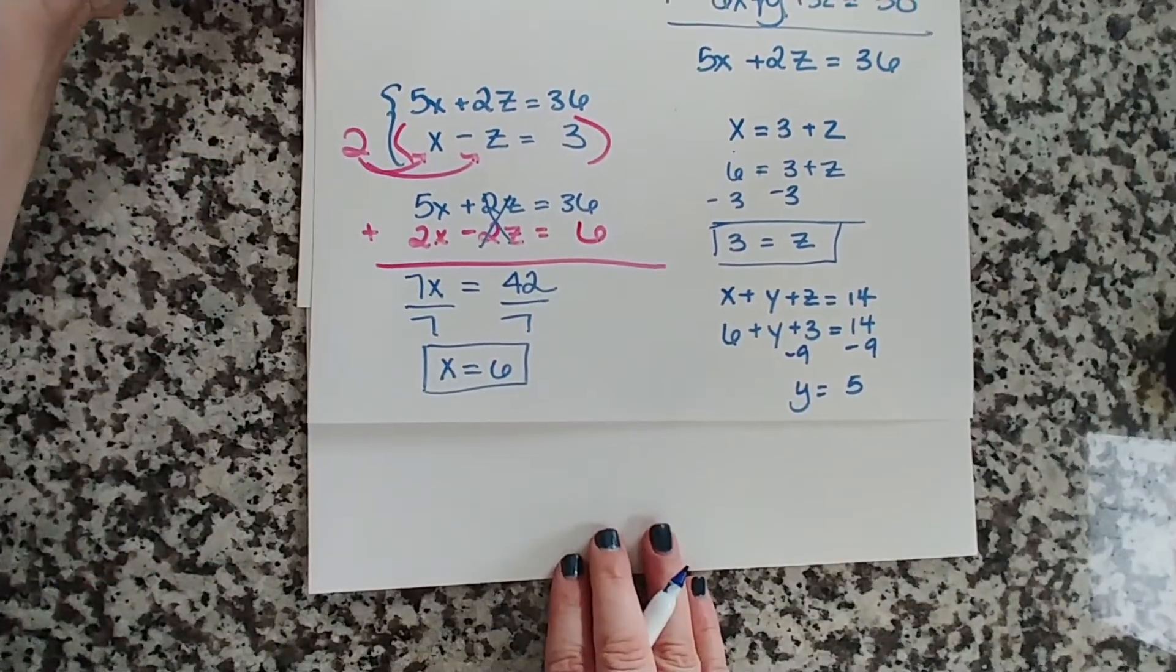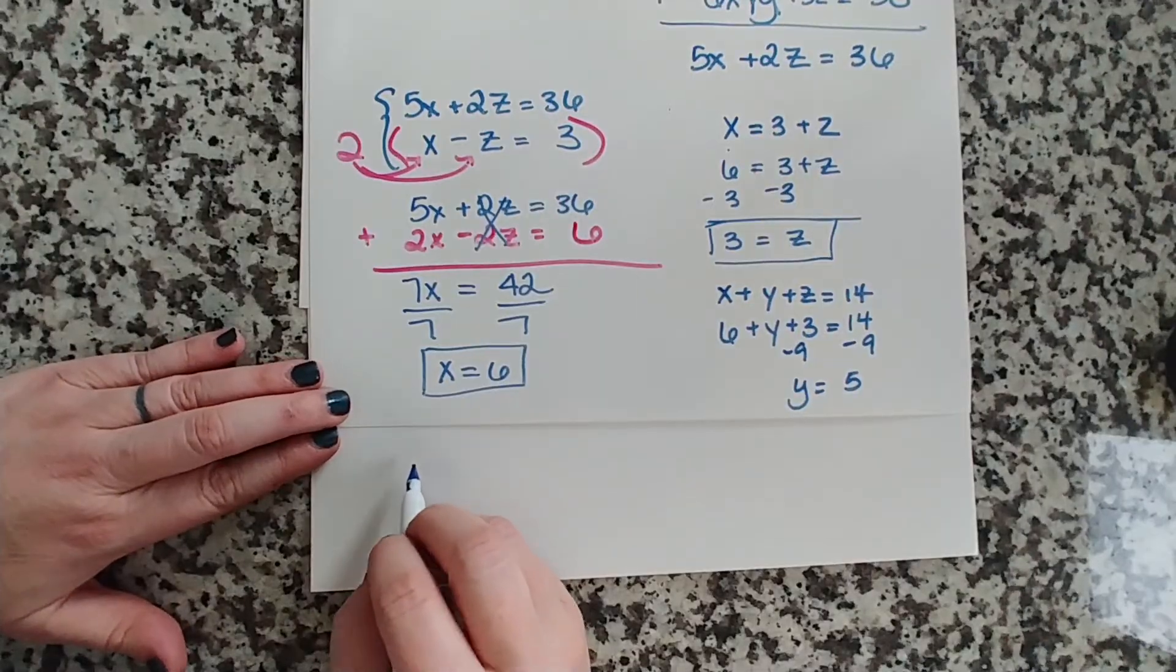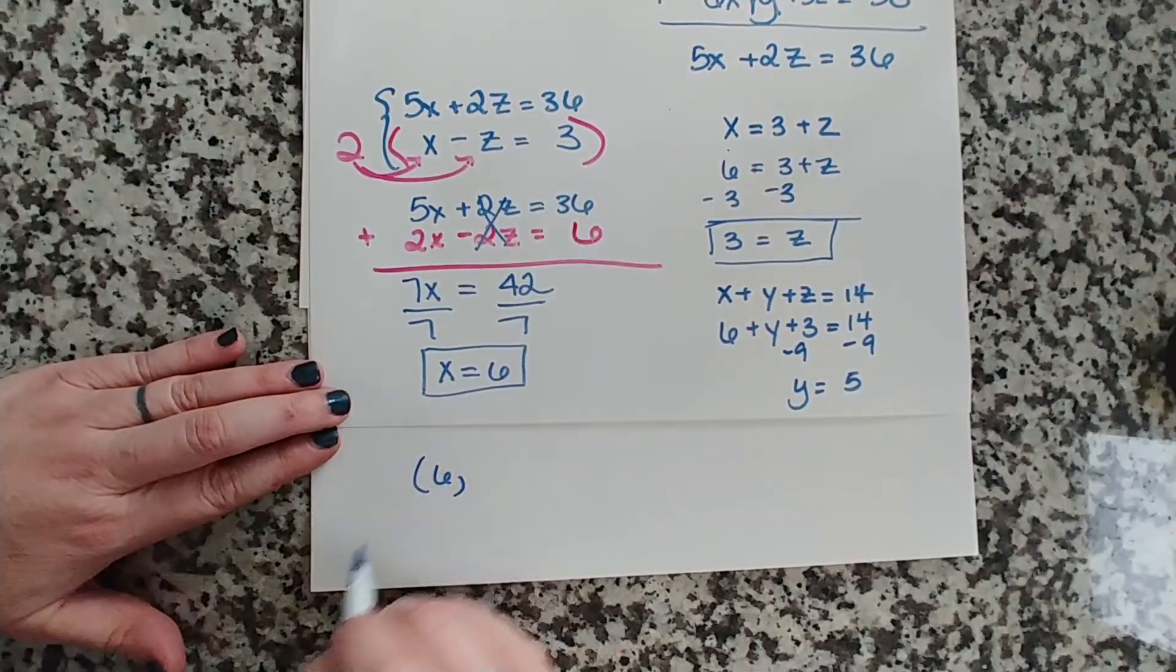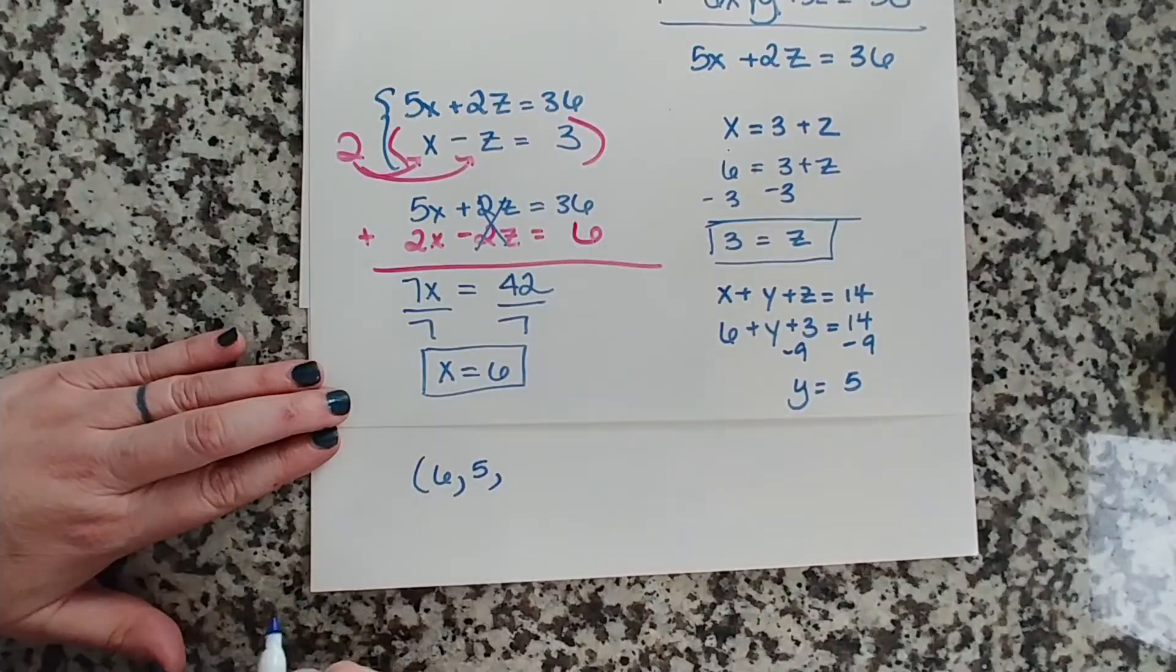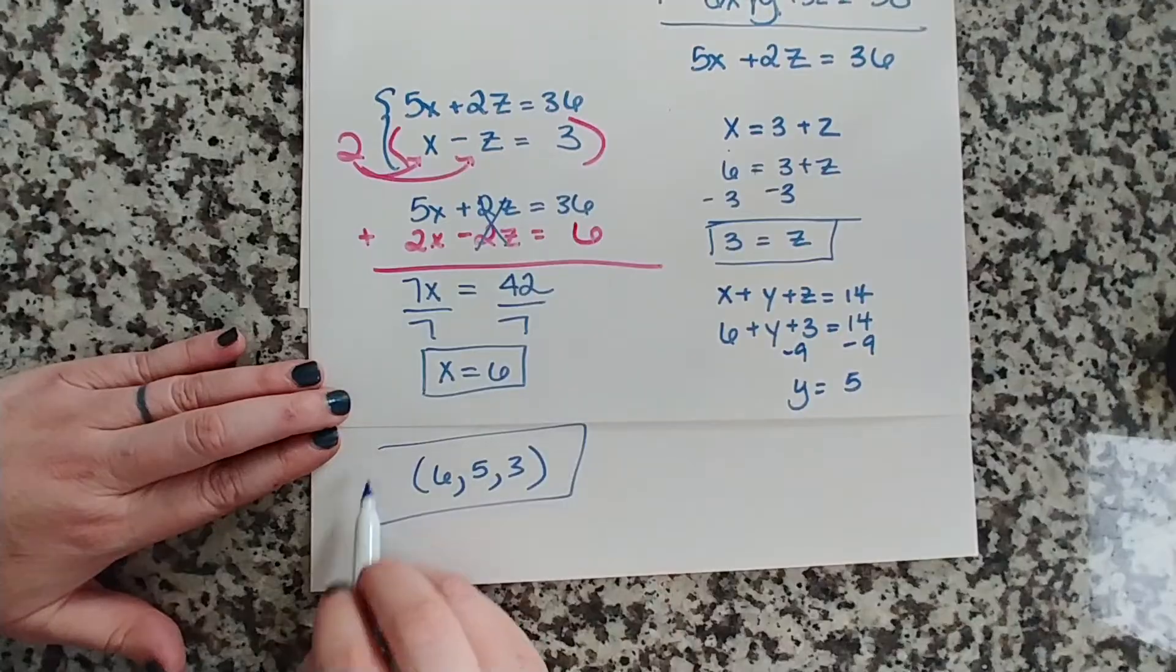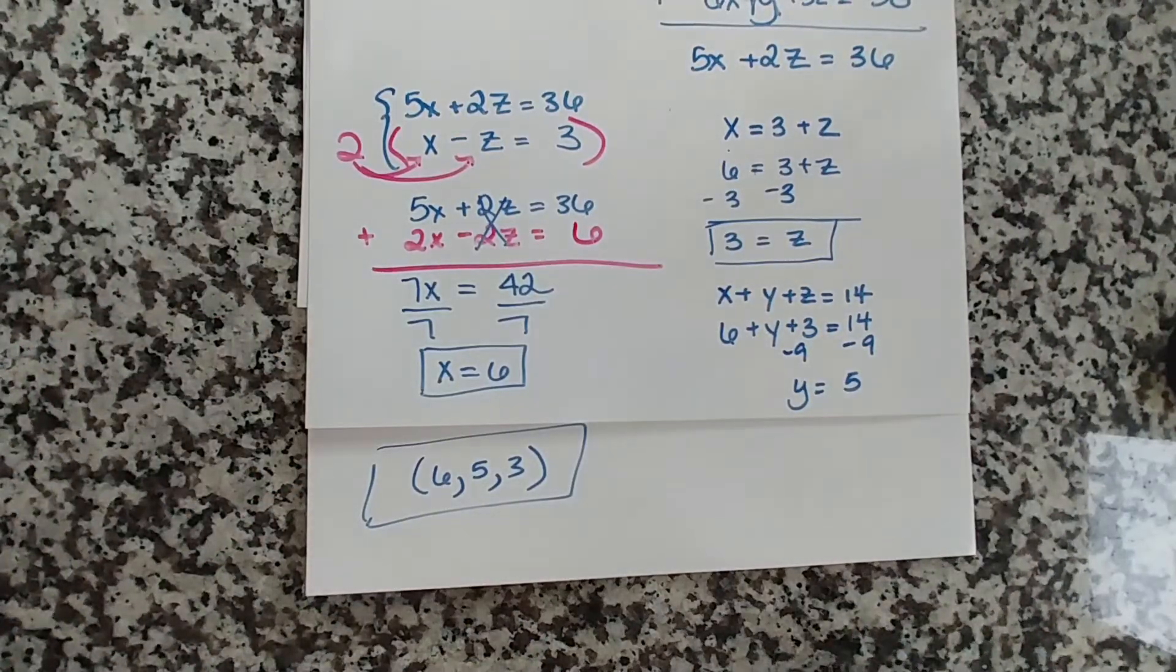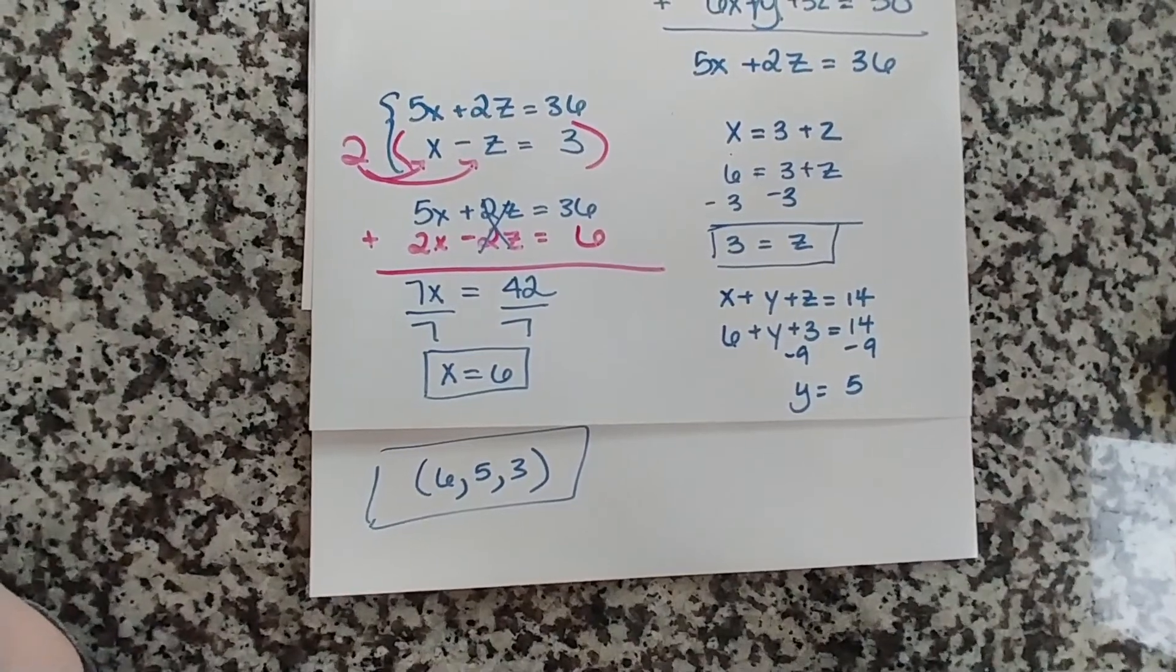One more thing, your answer is a coordinate point, so let's write it correctly. It is a three-dimensional system point. So we're going to say 6 is our X value, 5 is our Y value, 3 is our Z value, and that is our final answer. Okay, I hope this solution helped. If you have any questions, feel free to leave them in the comments. Thanks for watching.